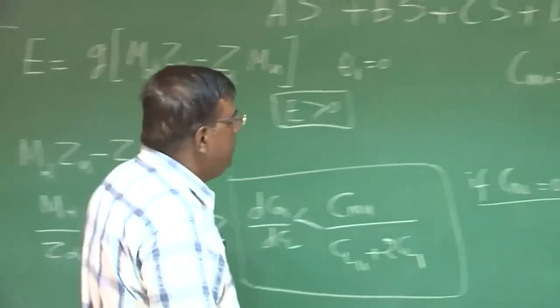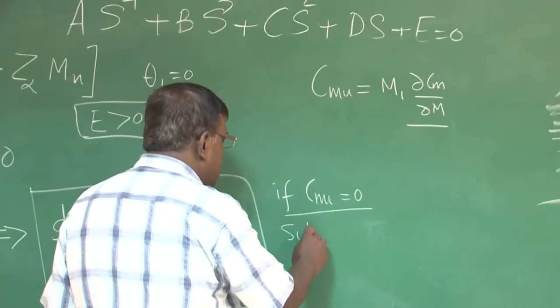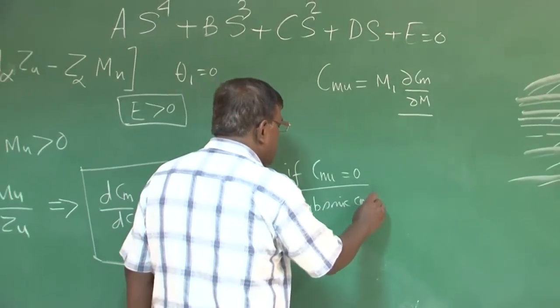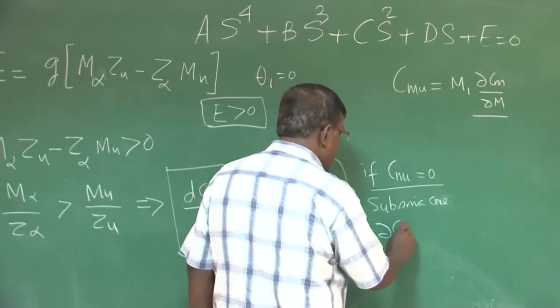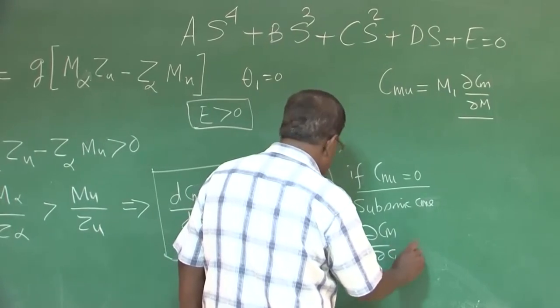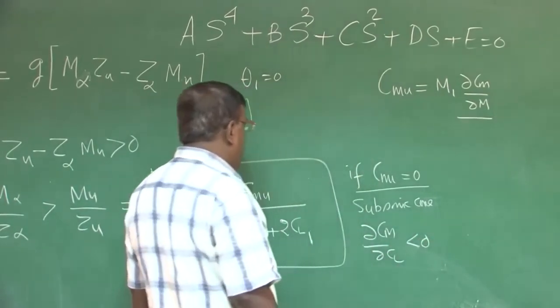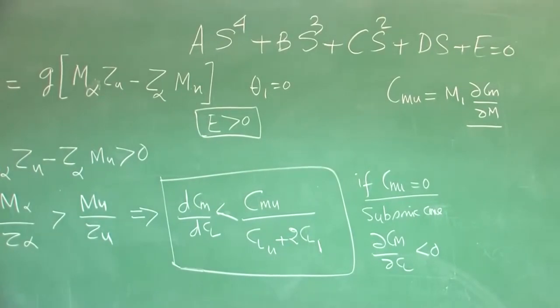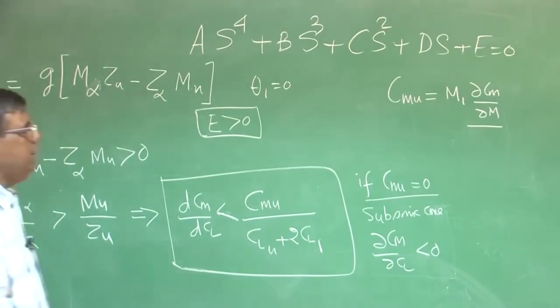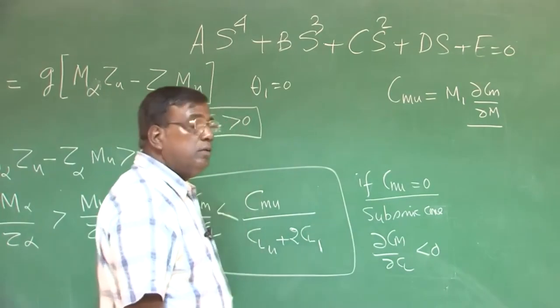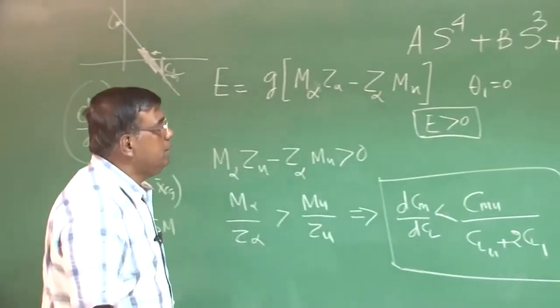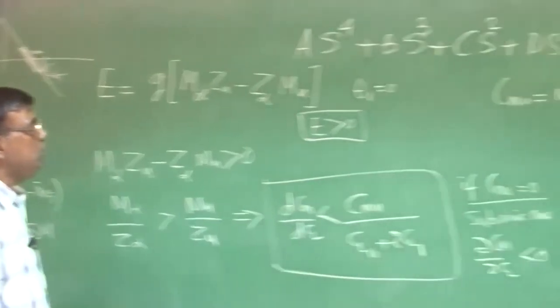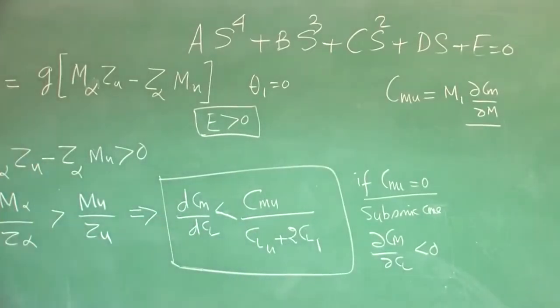So for subsonic case, the condition still remains dC_m/dC_l less than 0, which will satisfy both static and dynamic stability. But if it is on the transonic or around towards subsonic transonic at that region, where C_m_u is not 0, what happens then? What is the information you get out of it?